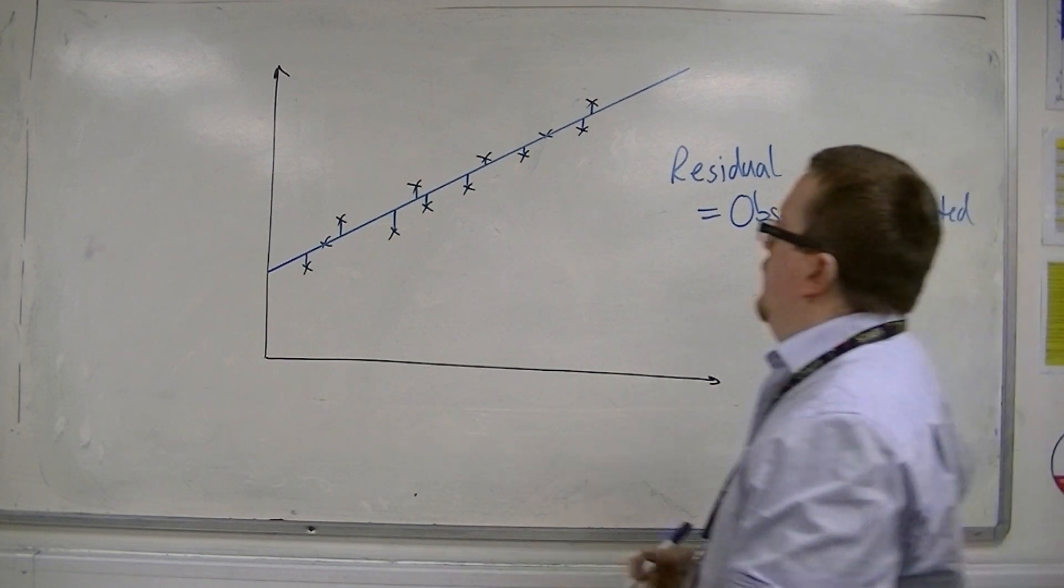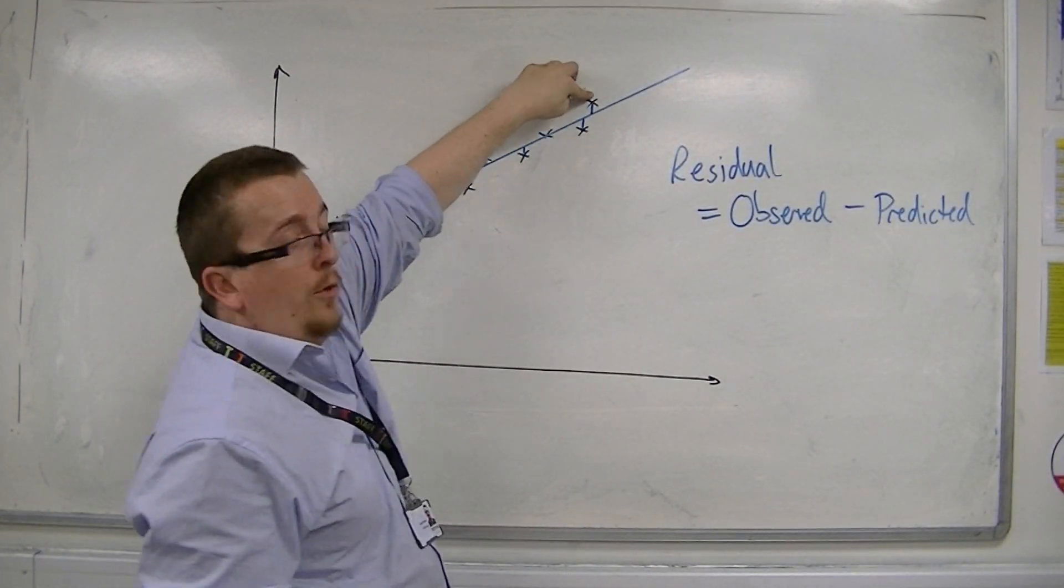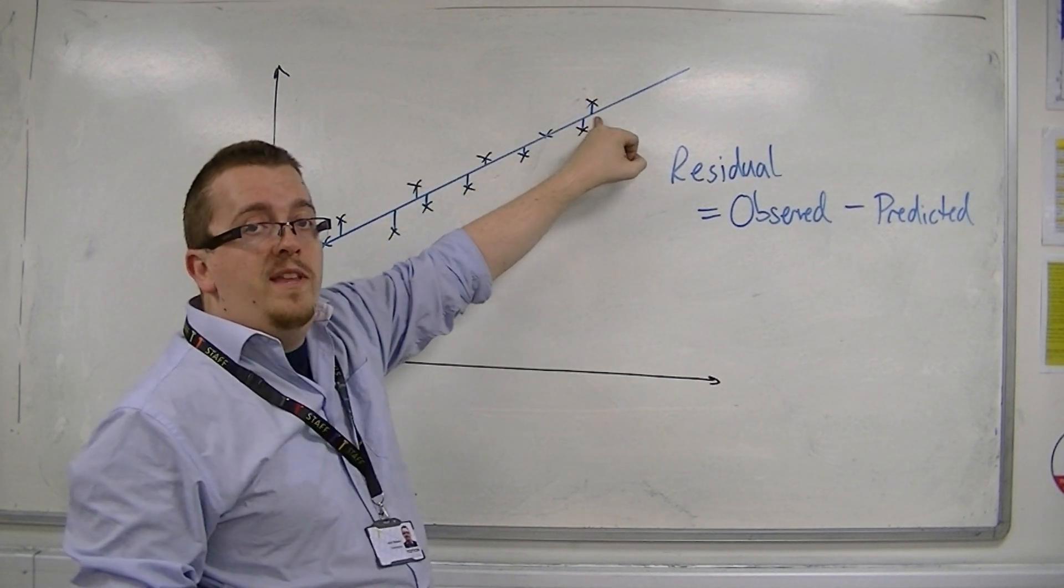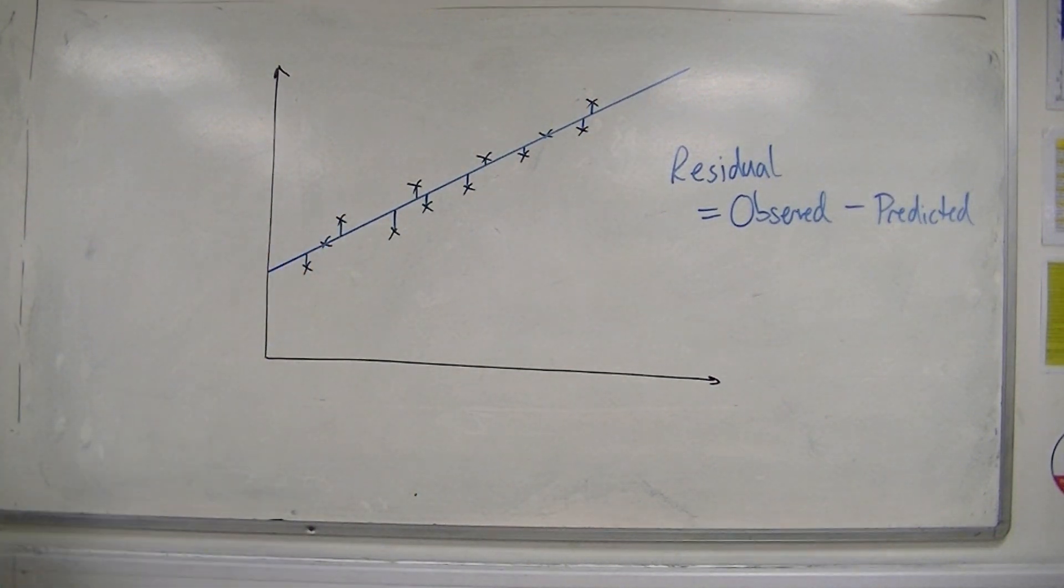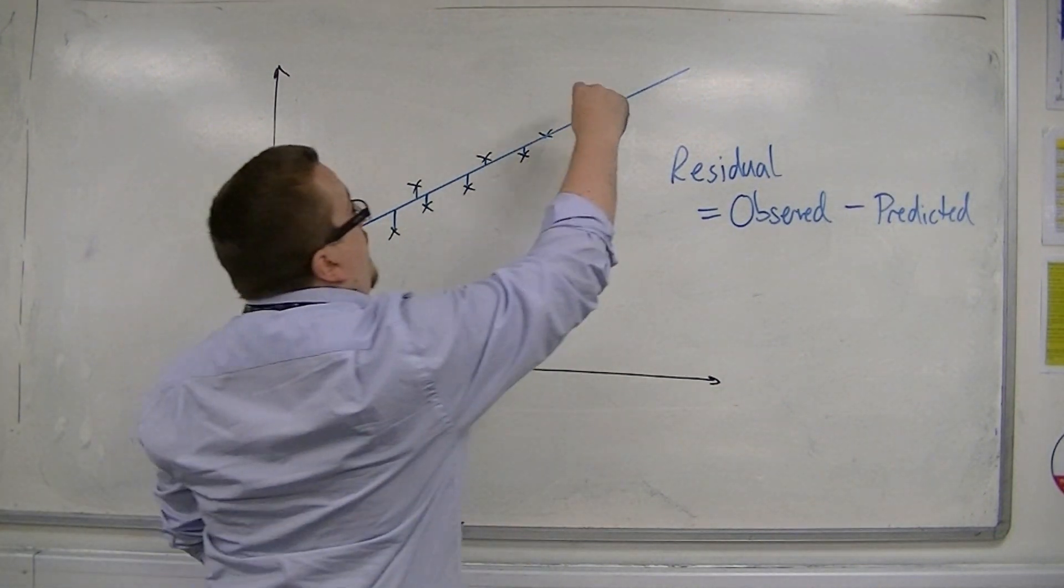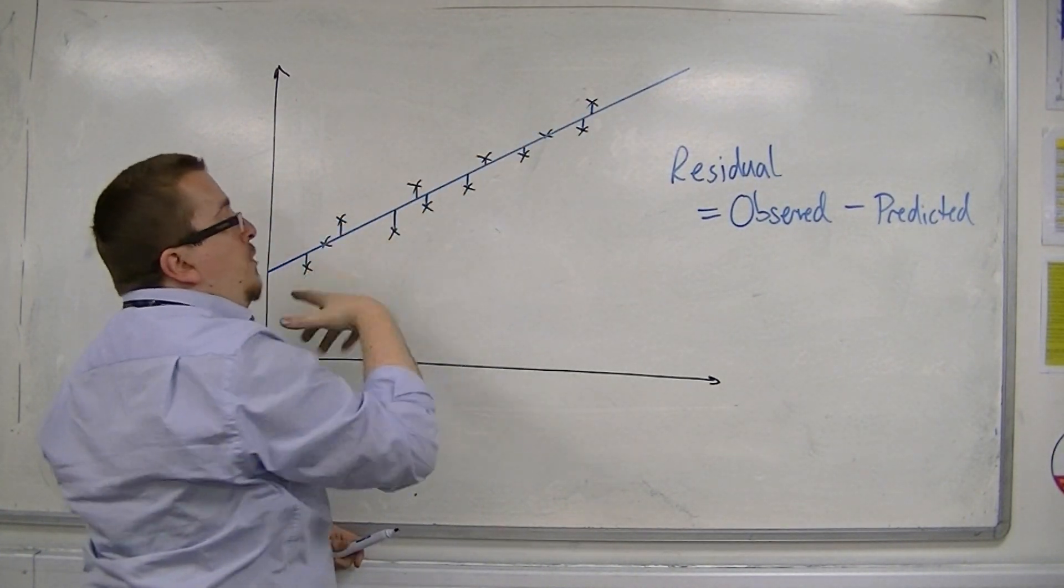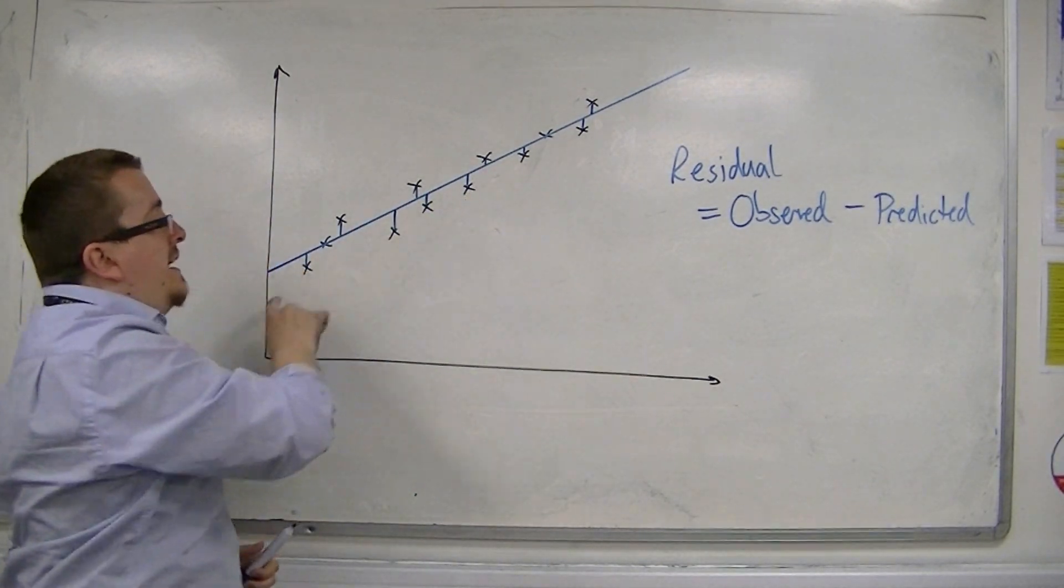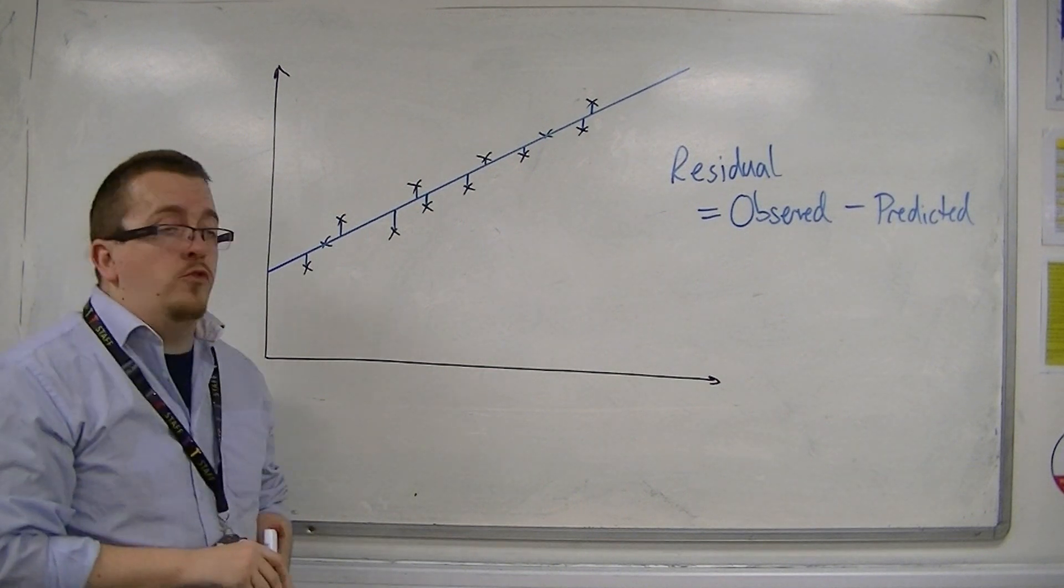So the actual point itself is the observed data and the predicted data is where it should appear on the actual line, on the least squares regression line. So that is why these ones that are above the line would be positive and those below the line would be negative.